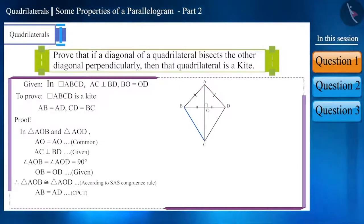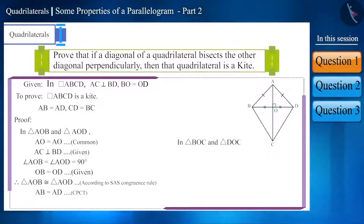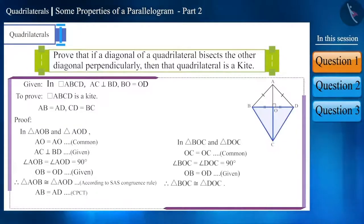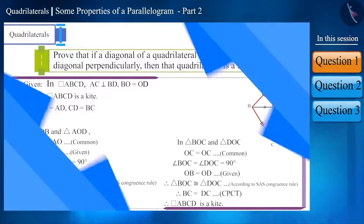Similarly, we can prove side BC to be equal to side CD. Therefore, quadrilateral ABCD is a kite. Now, let's take the next question.